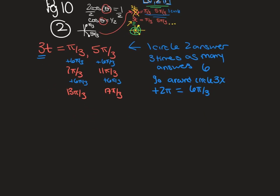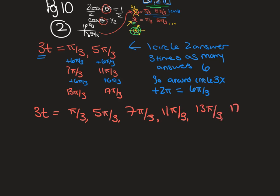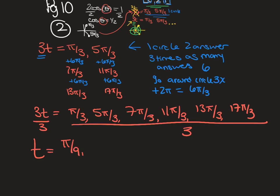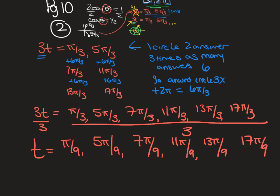So we have 3t equals π/3, 5π/3, 7π/3, 11π/3, 13π/3, and 17π/3. Dividing everything by 3, t equals π/9, 5π/9, 7π/9, 11π/9, 13π/9, and 17π/9. Those are the six answers.